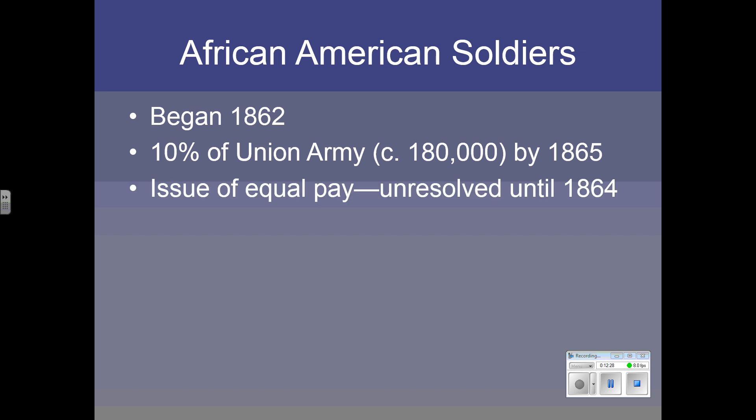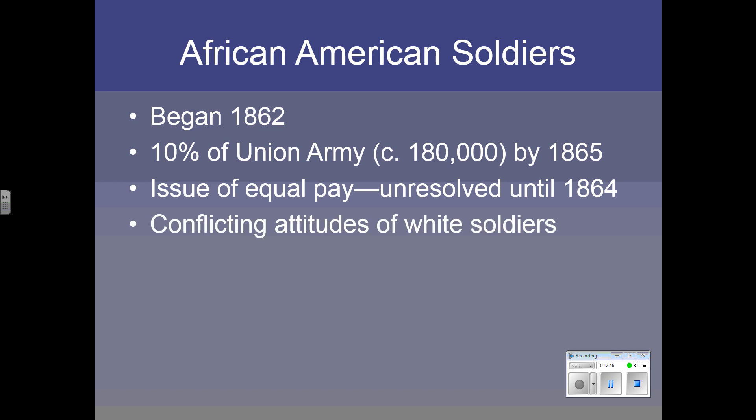For a long time, though, African American soldiers were not given equal pay. The response of the 54th Massachusetts Regiment was to say: if you can't pay us the same as white soldiers are getting, then we don't want to be paid at all. This was a very important matter of principle to them, but they were paid the same beginning in 1864.